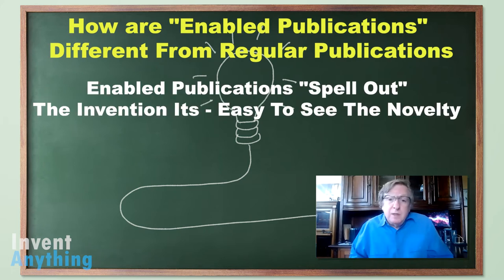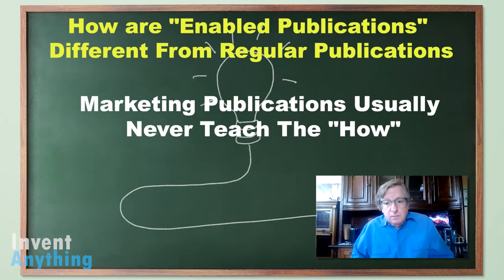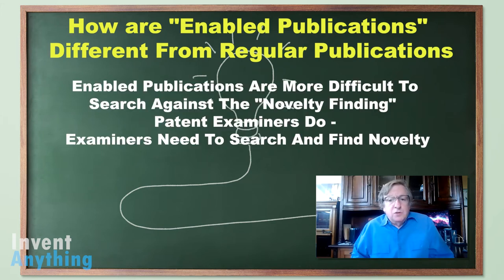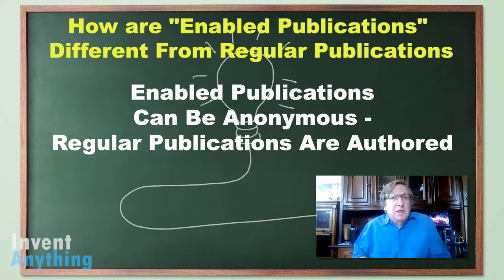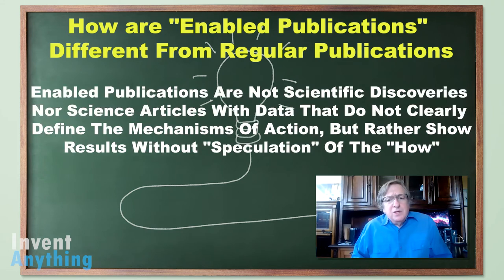In most publications, they don't spell out the invention. An Enabled Publication needs to show the novelty and needs to enable that novelty — marketing publications never do this. Enabled Publications are also more searchable because you're actually writing for examiners, who need to find that novelty quickly. We talked about Enabled Publications being anonymous — regular publications are never anonymous. Everybody always puts their names on it, which can make it easy for competitors to piece together your work. So you're hiding your invention, if you will, in the public domain.